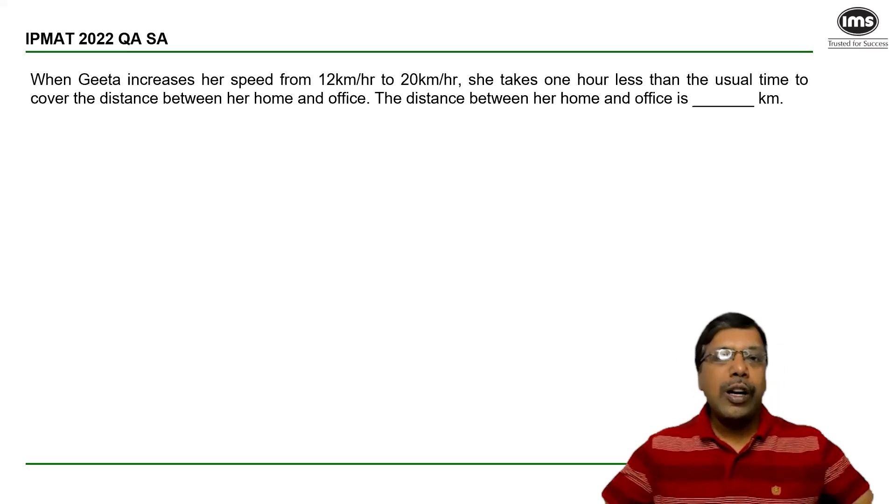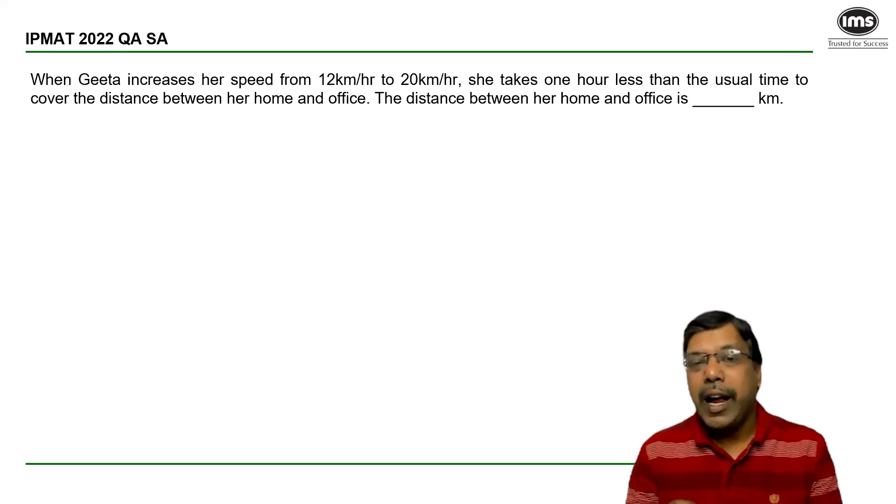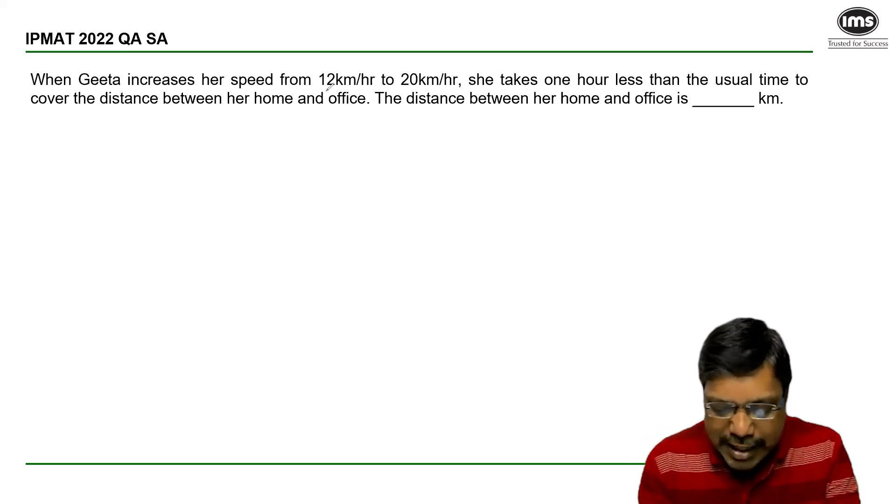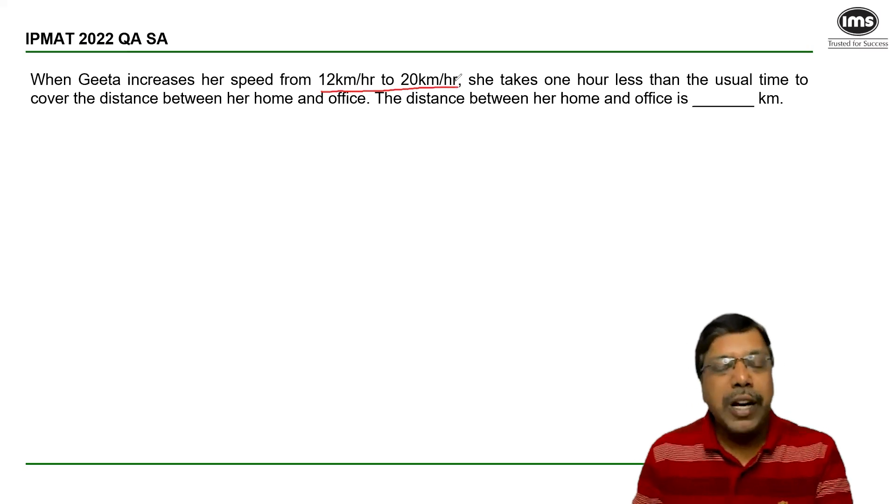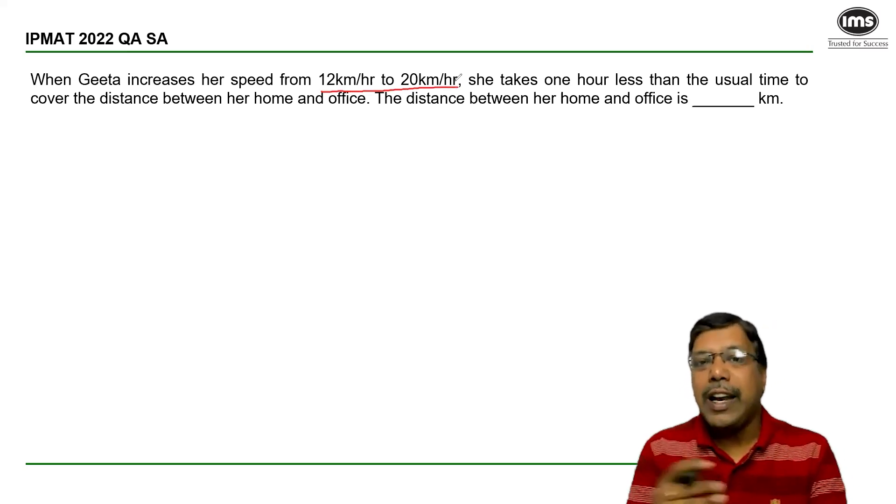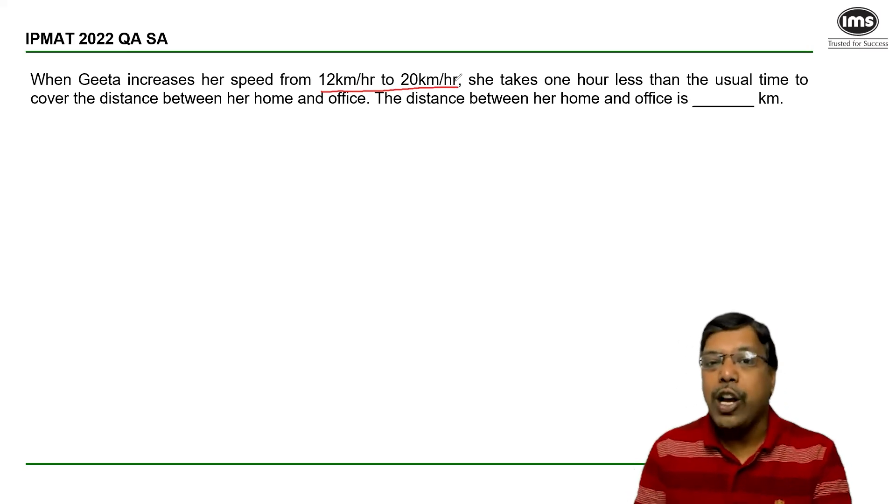A simple problem on time, speed and distance that can be solved by a basic understanding of the relation between speed, distance and time. When Geeta increases her speed from 12 kmph to 20 kmph, she takes one hour less than the usual time to cover the distance between her home and office.